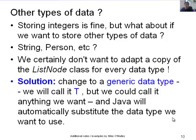Storing integers is fine, but what if we want to store other data types like strings or persons? We certainly don't want to create a copy of the ListNode class for every data type — taking the code and changing int to String throughout, saving a special ListNodeString version, and a ListNodePerson version. That's unnecessary duplication, and if we add new functionality to ListNode we'd need to copy it into all those versions, which is really nasty.